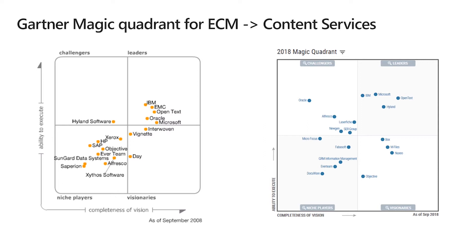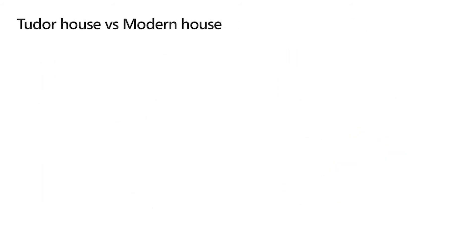Looking at the Gartner quadrant, back in 2008, some names have since disappeared, but the main ones — Oracle, Microsoft, Open Text, IBM — still remain. Microsoft has been doing exceedingly well in the 2018 quadrant. Over those 10 years, SharePoint has evolved quite a lot, and so has the terminology. Gartner used to use 'ECM' as the term but is now transitioning more into 'content services' rather than 'enterprise content management,' because a lot has changed around that.